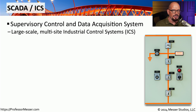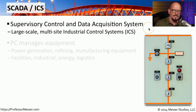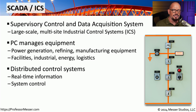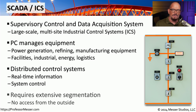When talking about larger industrial equipment, you may be referring to SCADA or ICS — Supervisory Control and Data Acquisition Systems, or Industrial Control Systems. These are very large systems that might be in a manufacturing environment or used for power generation. These systems require real-time monitoring, and we need to be sure we can control the system across the network at a moment's notice. If you look at a network with SCADA devices, you'll notice it is completely segmented from the rest of the network, and only people with the right access in the right location are able to access these systems.